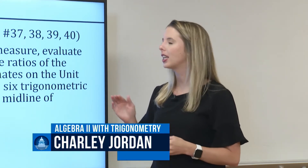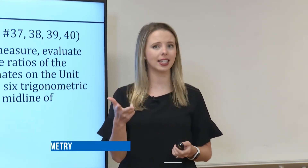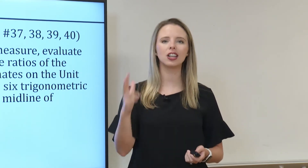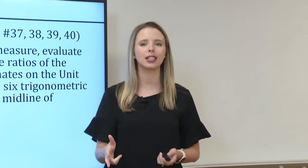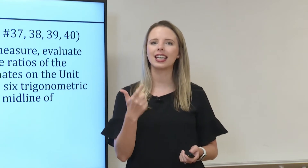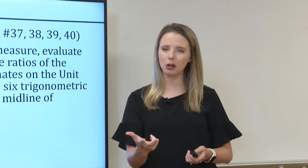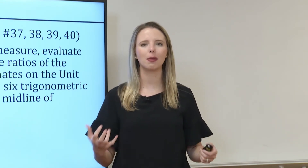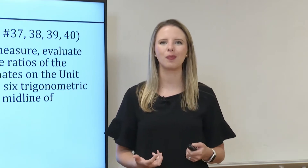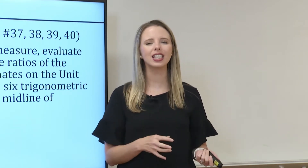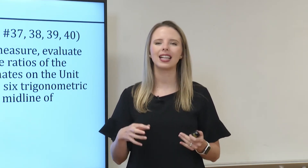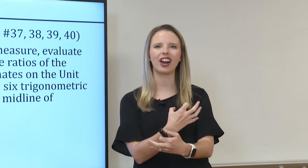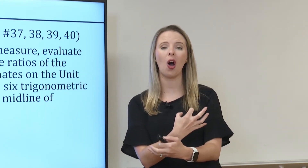Last week we talked about sine, cosine, and tangent. We reviewed those, and we also discussed their reciprocal functions — cosecant, secant, and cotangent — and we really dove into developing our understanding of the unit circle. This week we're going to begin with radians and degrees, and then we're going to tie everything together and see how it all relates.